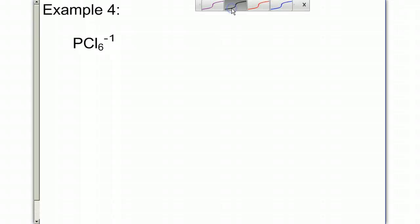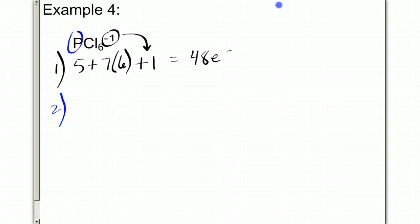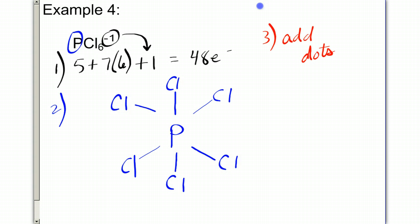Okay, PCl6 with a negative 1 charge. First, we're going to add the valence. Phosphorus has 5 plus 7 for chlorine times 6 chlorine atoms plus 1 for the charge. That's going to give me a total of 48 electrons. Let's see what we have with this particular scenario. Now we're going to draw the skeleton structure and phosphorus goes in the middle. It's surrounded by 6 chlorines. This is how I tend to like to draw 6. I kind of make a star and I put all chlorines around it. And now I'm on to my next step, which is step 3. I've got to add my dots.